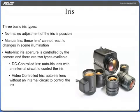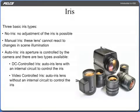The role of the iris is to adjust the amount of light passing through the lens. There are three basic iris types: no iris, manual iris, and auto iris. There are two forms of an auto iris lens: DC controlled iris and video controlled iris.